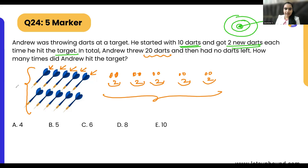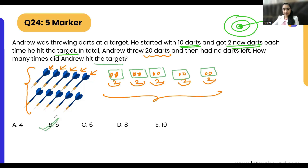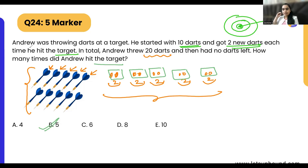He hit the target five times. He started with 10 darts, threw 20 in total, so he gained 10 extra darts. Since each hit gives 2 new darts, 5 times 2 equals 10 — meaning he hit the target exactly 5 times. The answer is option B — 5.